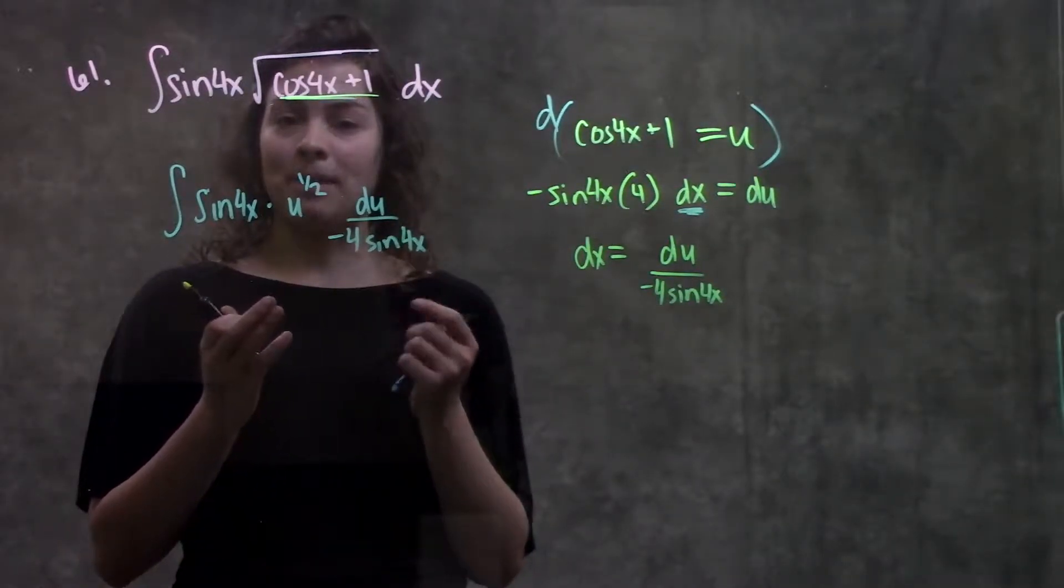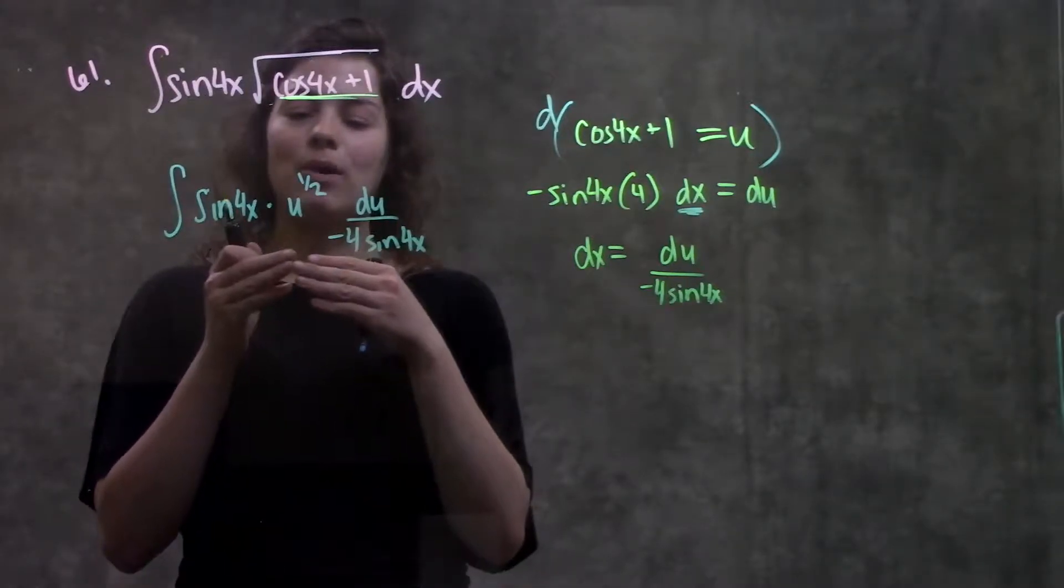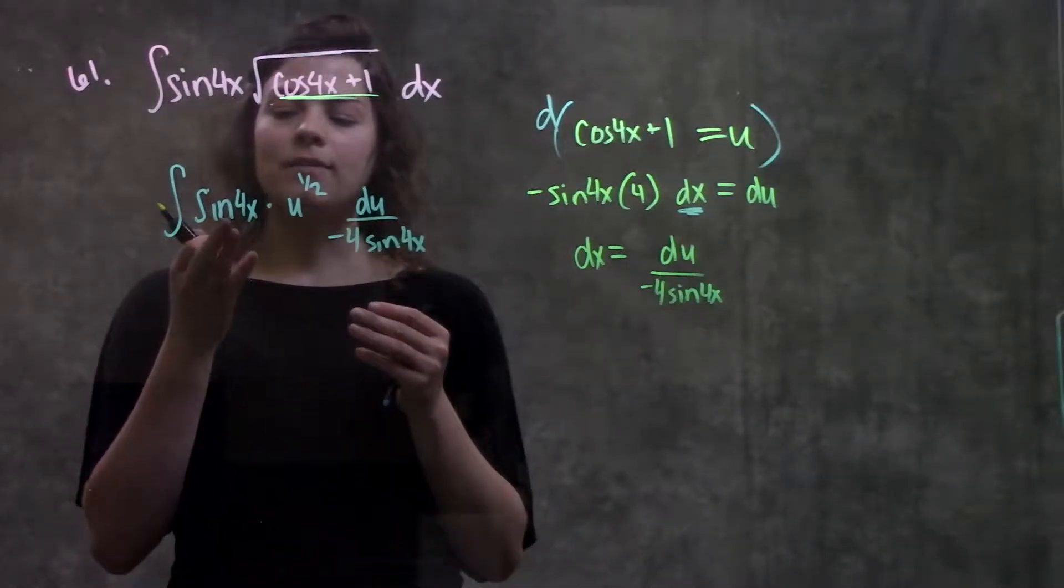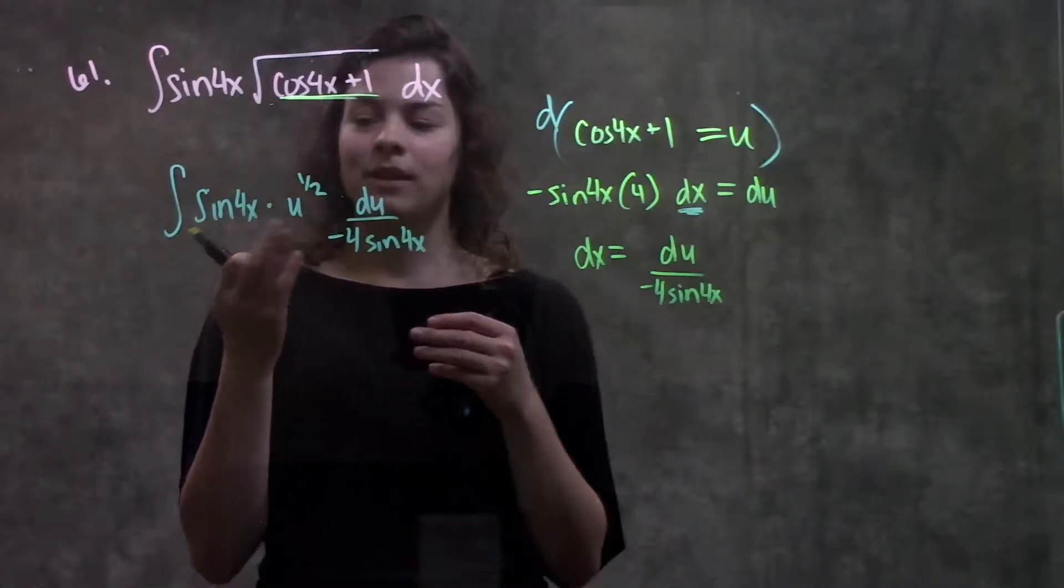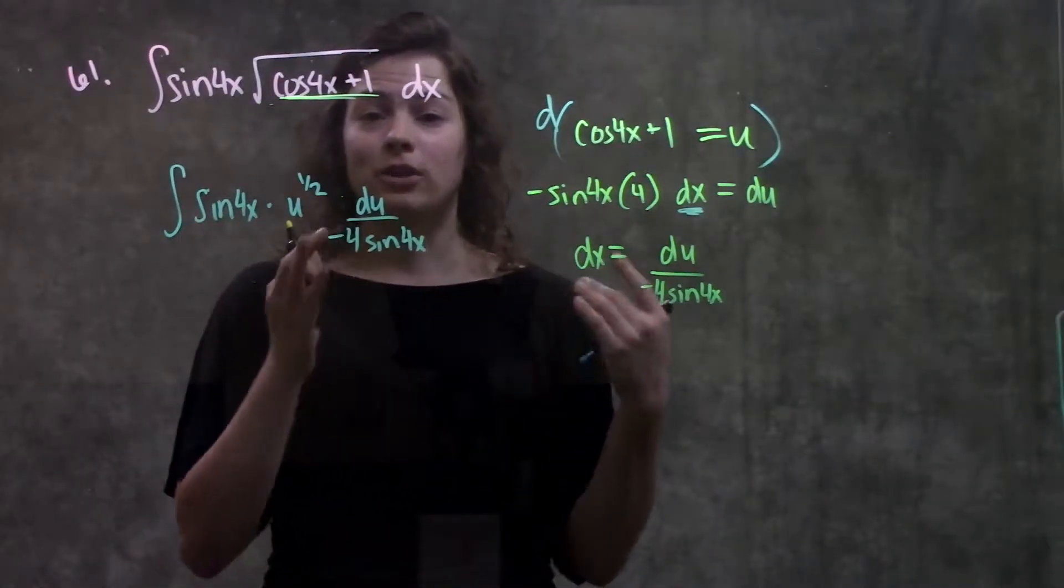And this is what should happen because remember, I want to rewrite this entire thing in terms of u. If this sine 4x didn't cancel, that would mean I have to go back, try something else. This method didn't work.